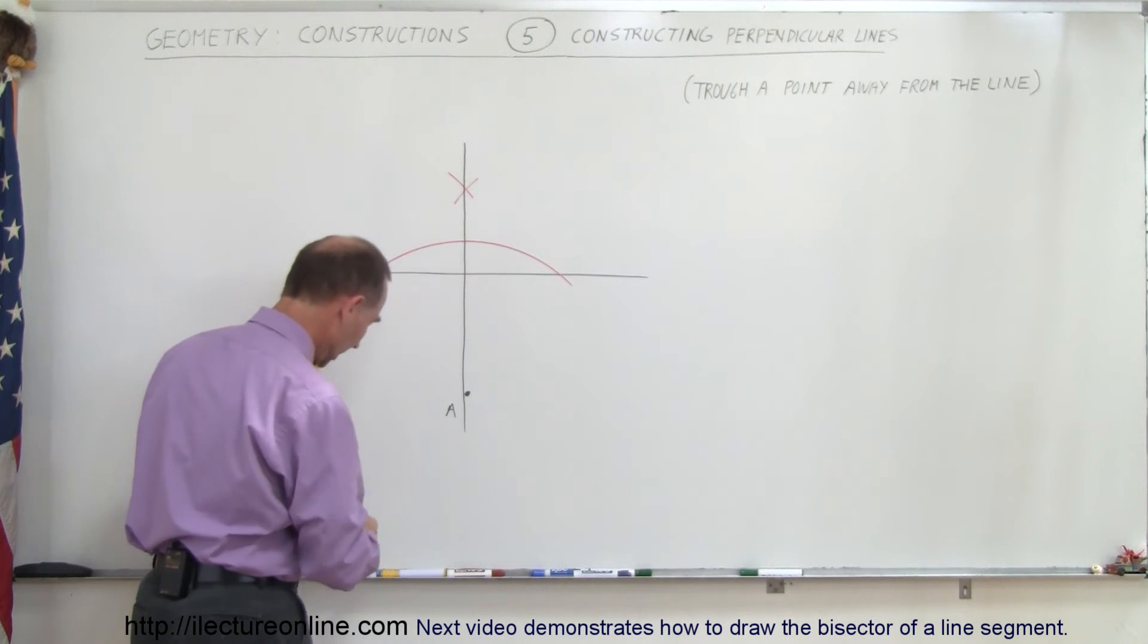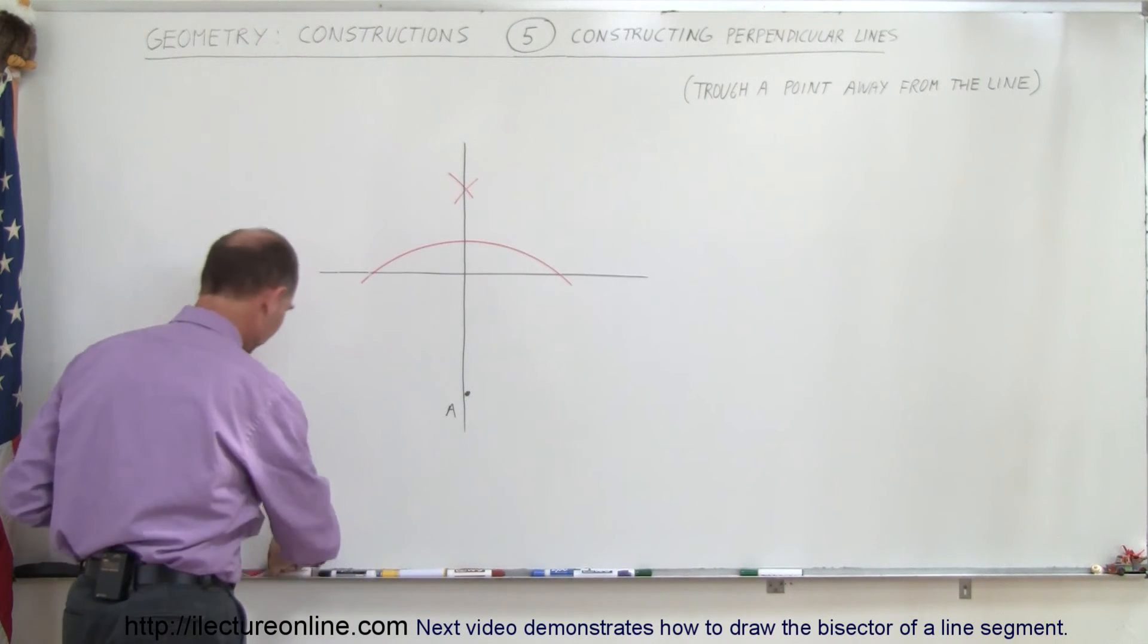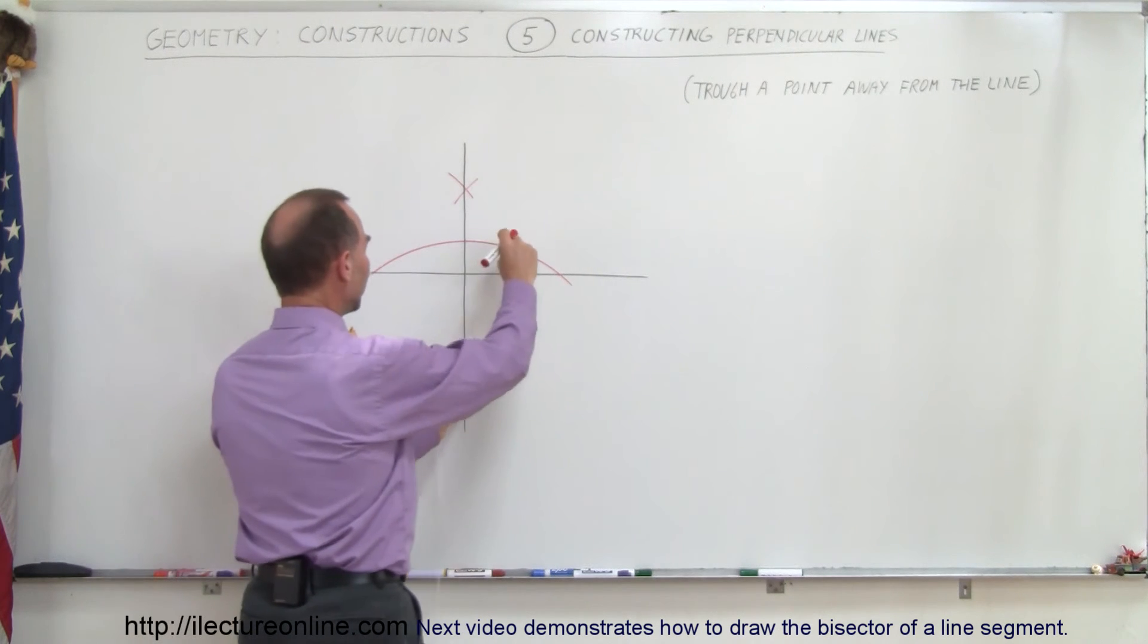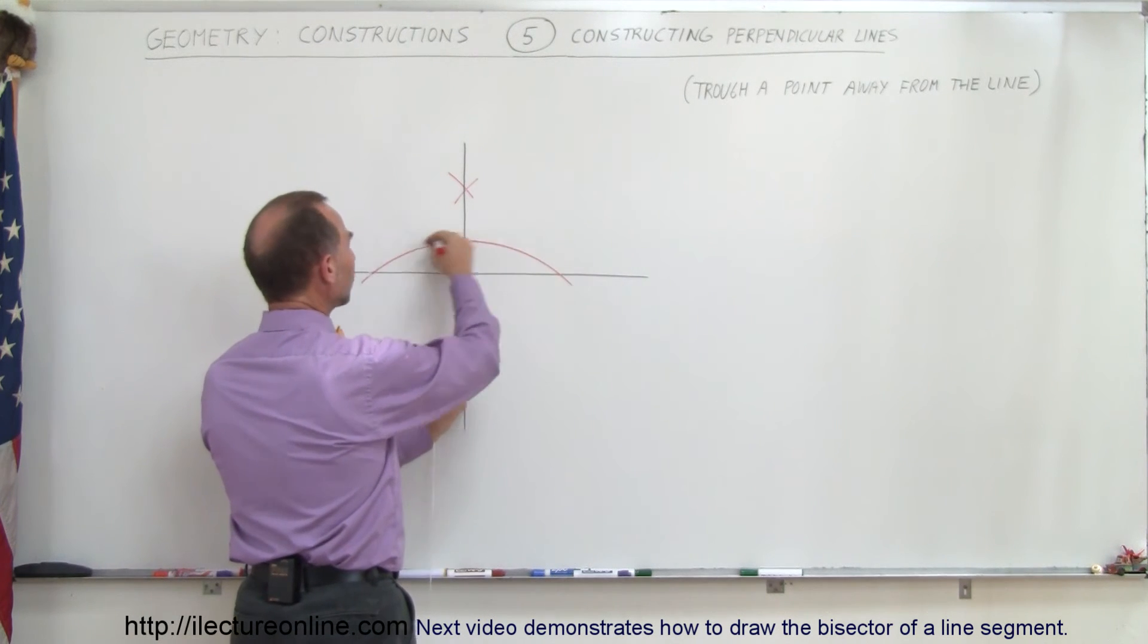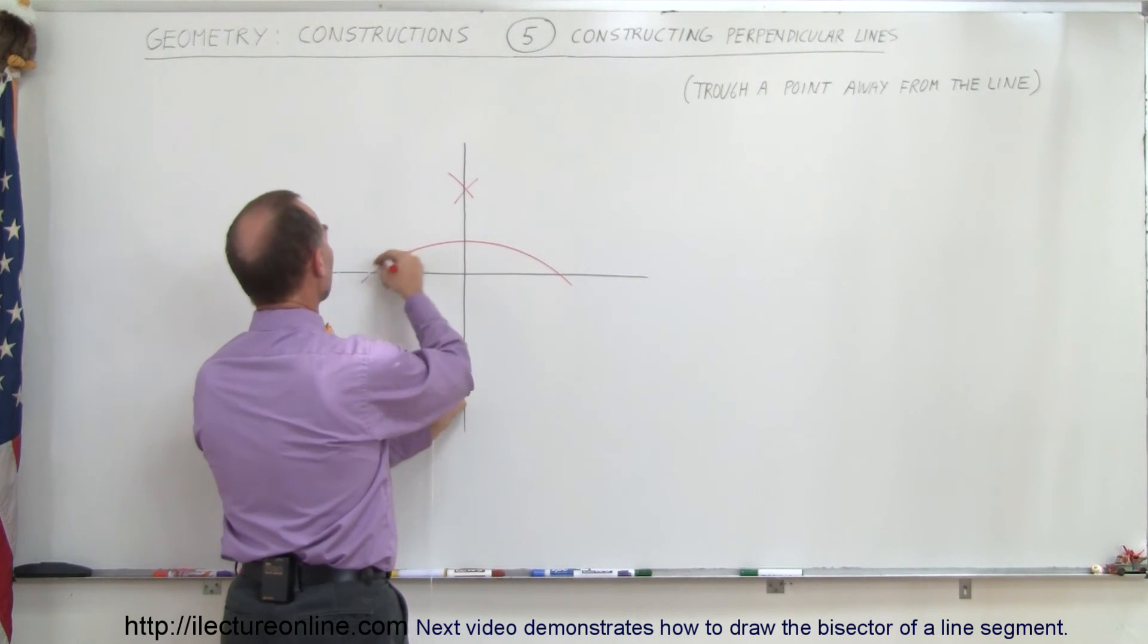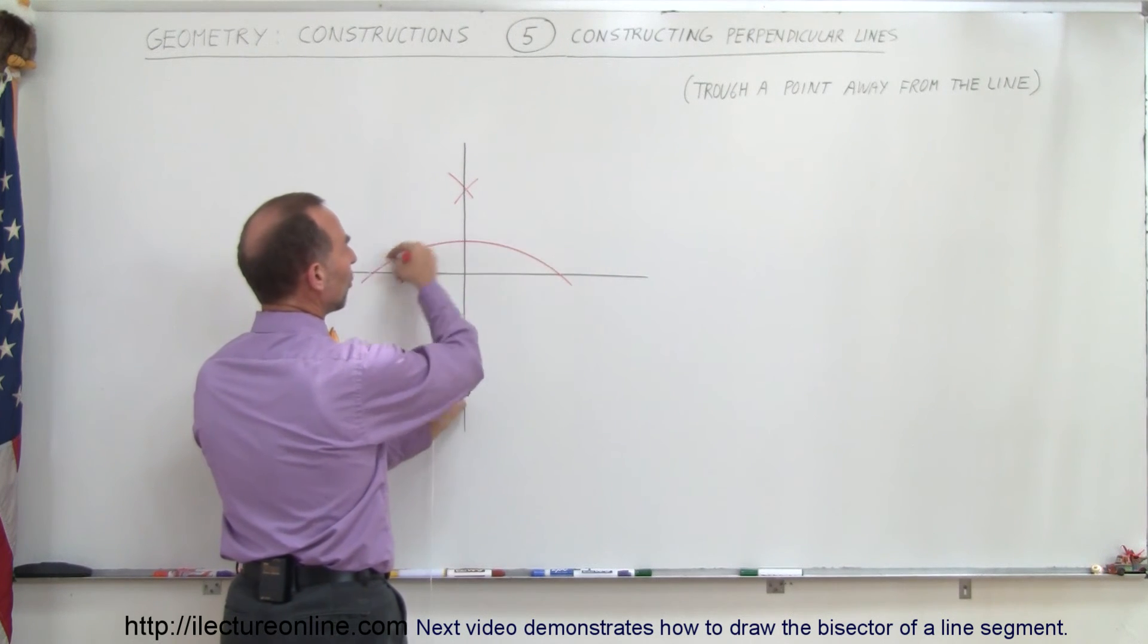Again, how do you do that? Take your compass and pen, go to the very end, draw an arc. You don't have to draw the whole arc, just draw the little line on this side and the line on this side.